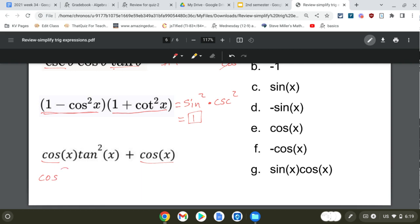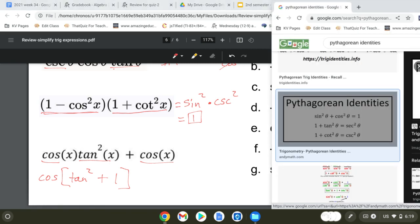Alright. If I factor out a cosine, the first term is going to become tangent squared plus, and then the second term is just going to become a 1, and I can replace tangent squared plus 1 with a secant squared.